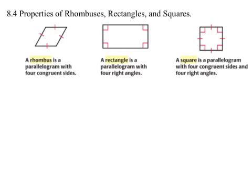Let's start section 8.4. We're going to learn about properties of rhombuses, rectangles, and squares. There will be a spelling test. Rhombuses — there's an H in there. What's cool is 'buses' is spelled the same way. So it's ROM with an H, and then buses.